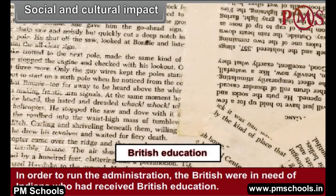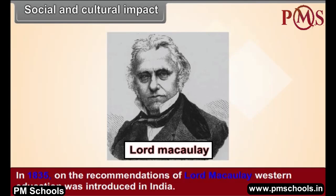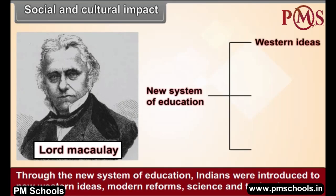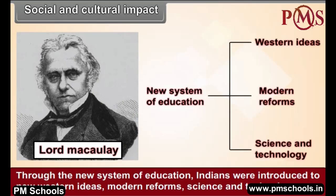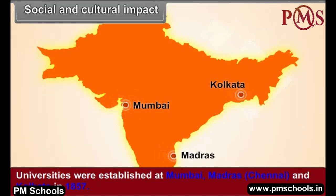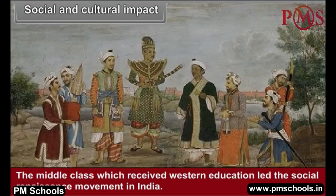In order to run the administration, the British were in need of Indians who had received British education. In 1835, on the recommendations of Lord Macaulay, Western education was introduced in India. Through the new system of education, Indians were introduced to new Western ideas, modern reforms, science and technology. Universities were established at Mumbai, Madras, and Kolkata in 1857. The middle class which received Western education led the social renaissance movement in India.